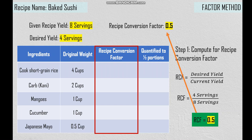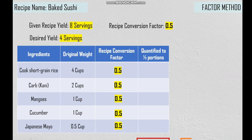Simply divide 4 servings by 8 servings and that will give us an RCF of 0.5. So for all the ingredients, we will use 0.5 as our recipe conversion factor. The next step in quantifying a recipe using the factor method is to simply multiply the original weight with the conversion factor in order to get the amount for the quantified one-half portions.